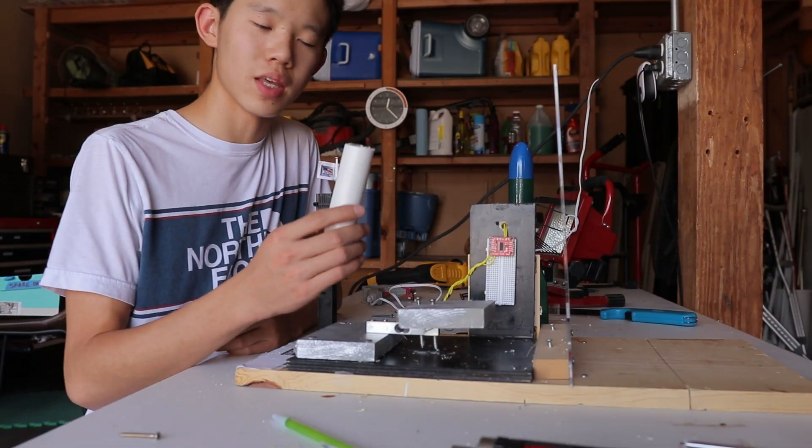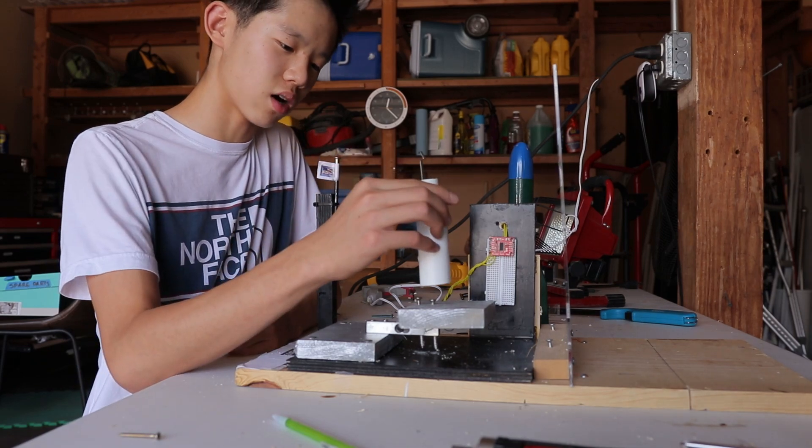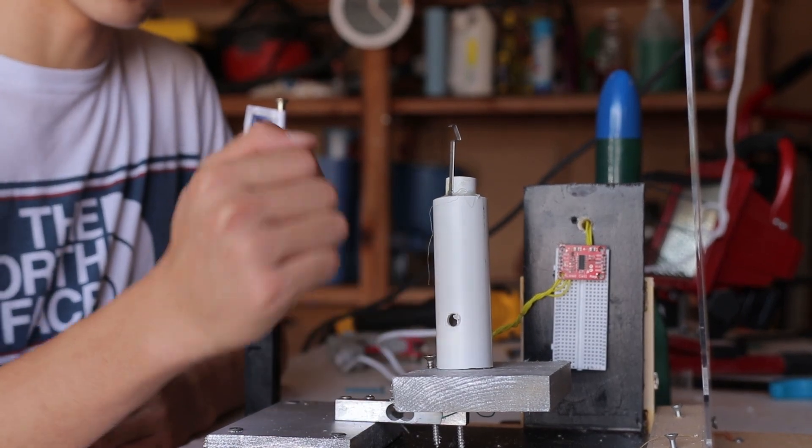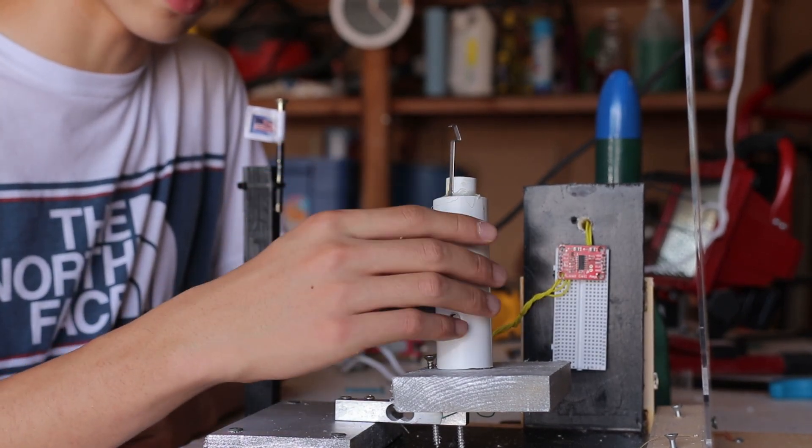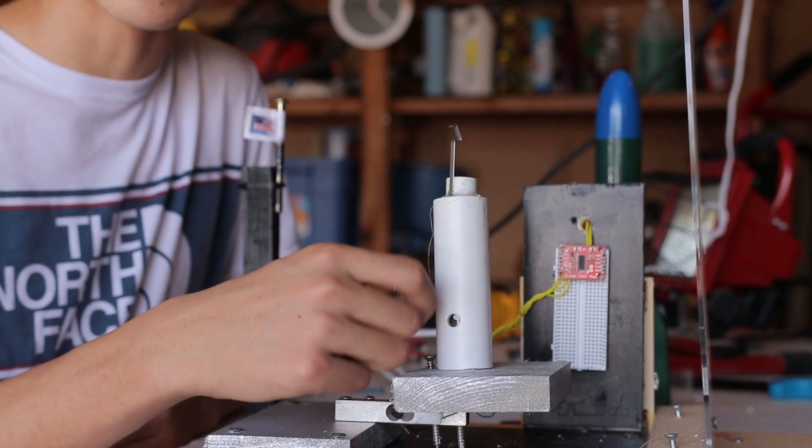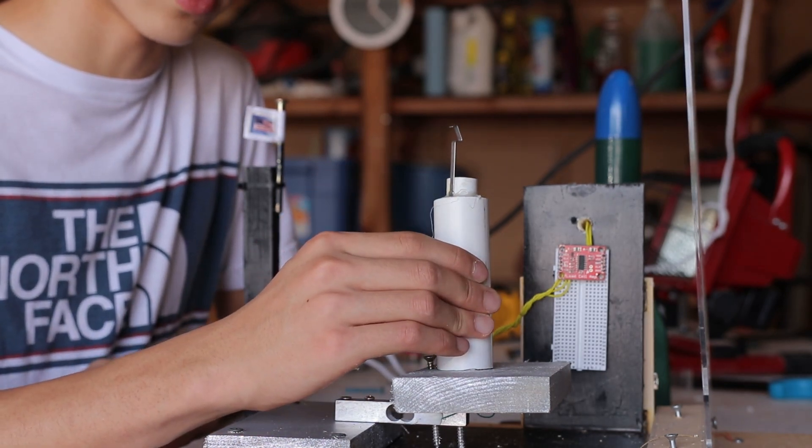We got epoxy on the motor mount and now we're just going to mount it on here. Make sure that the ejection hole that you use for the ejection charge is facing away from the computer stuff so they don't get damaged. If you want, you can fill this up with epoxy or hot glue, but make sure it's on there nice and tight.